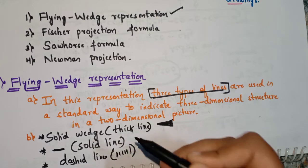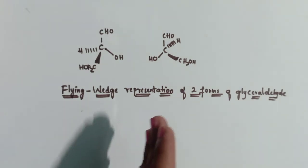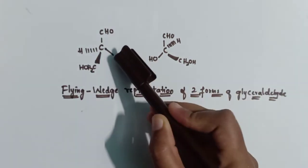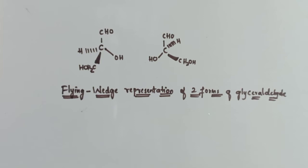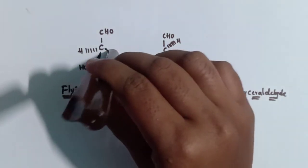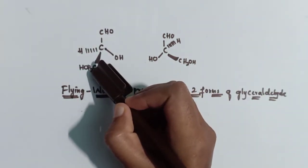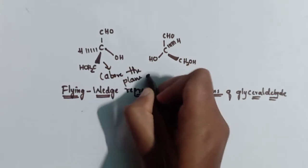Now let us see the use of these lines in flying wedge representation. Taking the example of glyceraldehyde: here is a thick line, here is a solid or continuous line, and here is a broken wedge or dashed line. The thick line represents a bond projecting above the plane of paper. If a bond projects above the plane of paper, it is represented by this solid wedge.